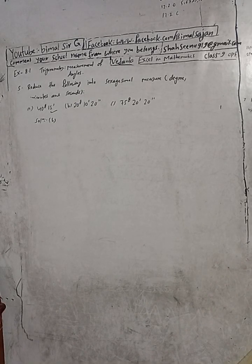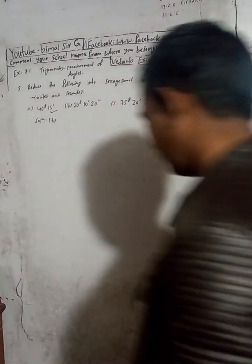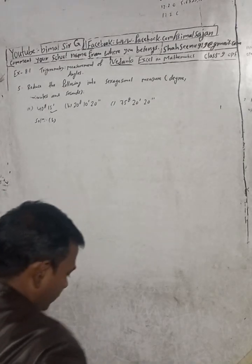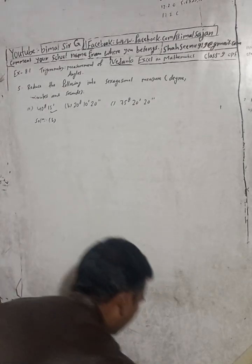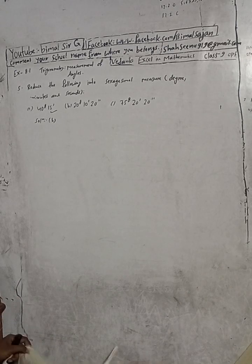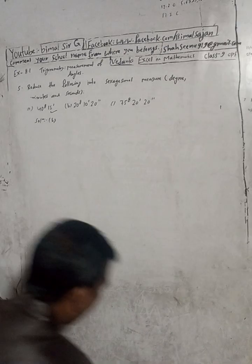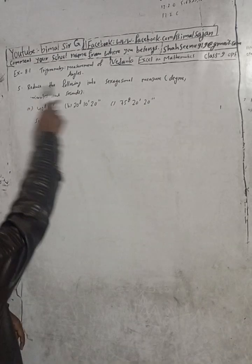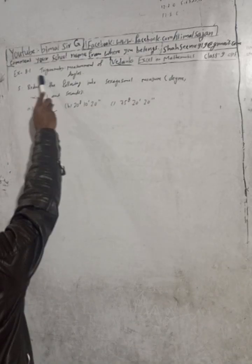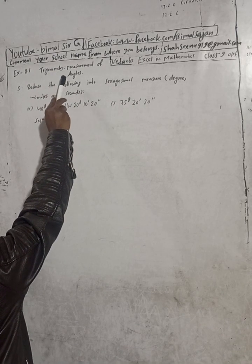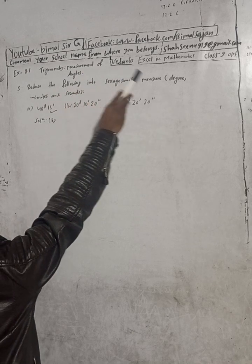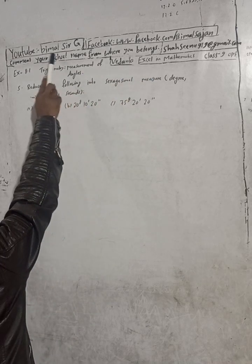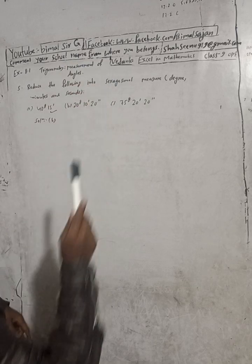Hi class 9 and 10 students, welcome back to the YouTube channel. In this season I am here to warm up your days and nights with exciting content. This is question number 5b, exercise 8.1, trigonometry - measurement of angles - in optional mathematics class 9. Don't forget to check the playlist.